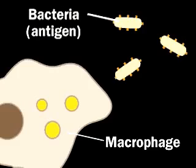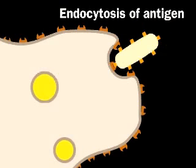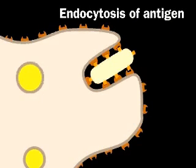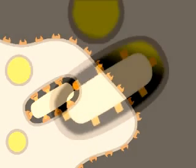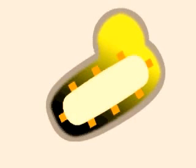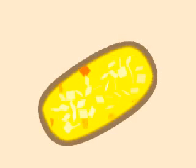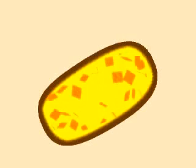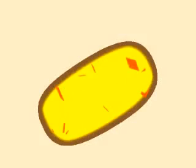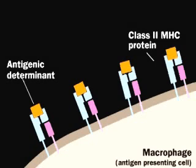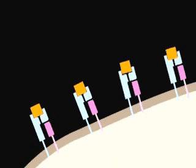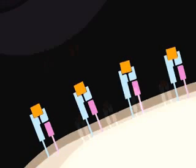The humoral immune response is initiated by a macrophage, which takes up an antigen, such as a bacterium or virus, and processes it. The macrophage engulfs the antigen in an endocytic vesicle and partially digests it. Class II MHC proteins bind fragments of the antigen and transport them to the cell surface for display. A cell displaying such foreign antigens on its MHC proteins is called an antigen-presenting cell.